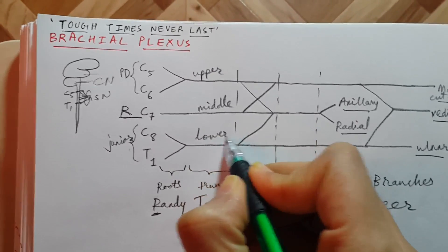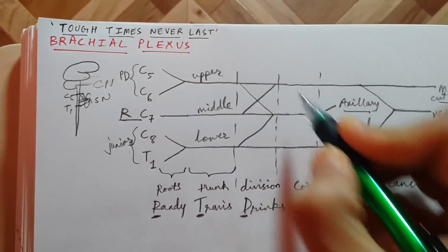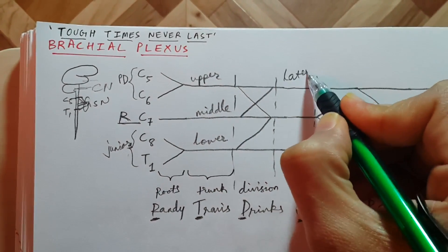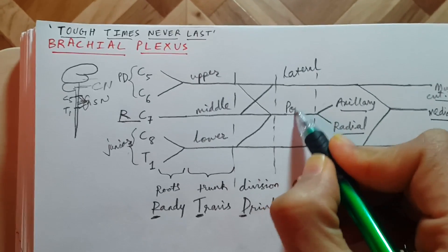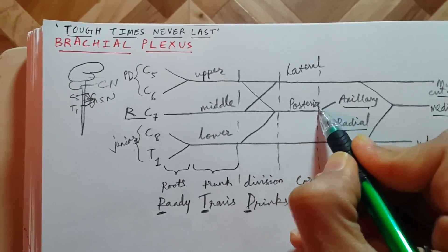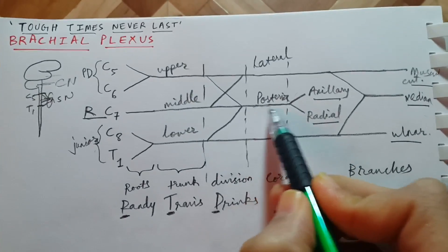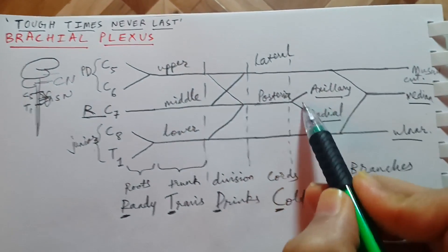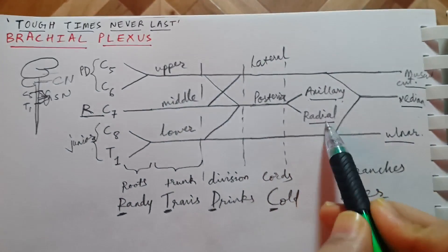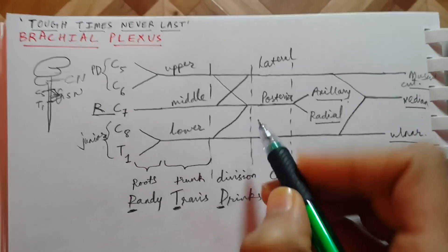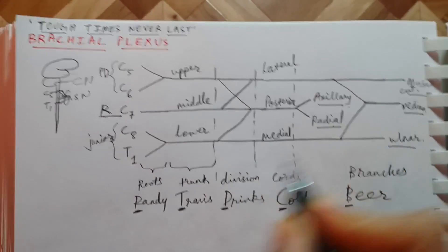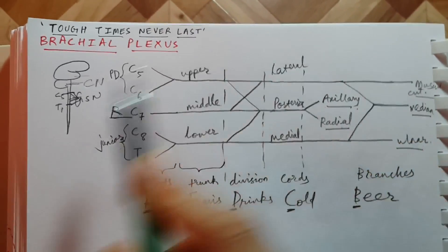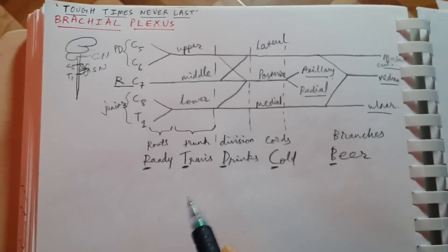The cords are the lateral cord, posterior cord, and medial cord. From the posterior cord we get the axillary nerve and the radial nerve. That covers the basic structure of the brachial plexus.